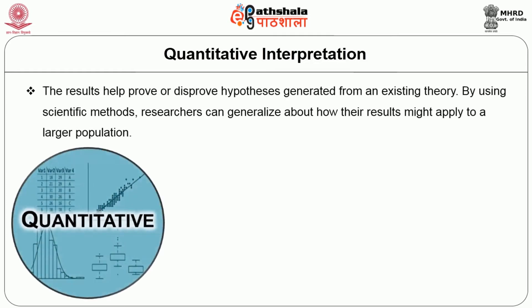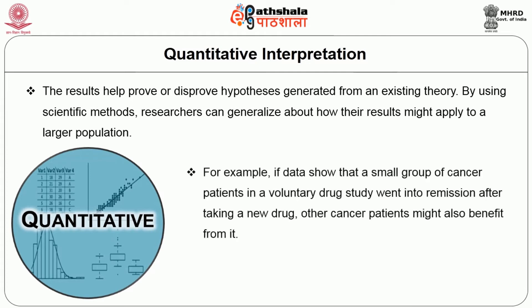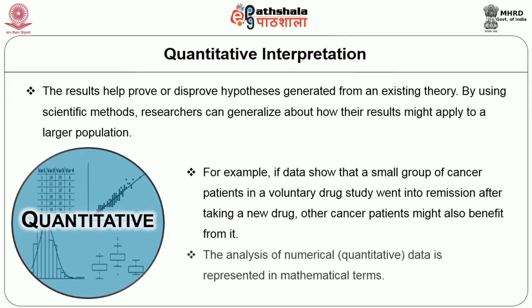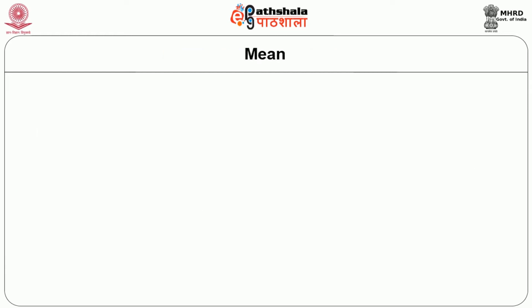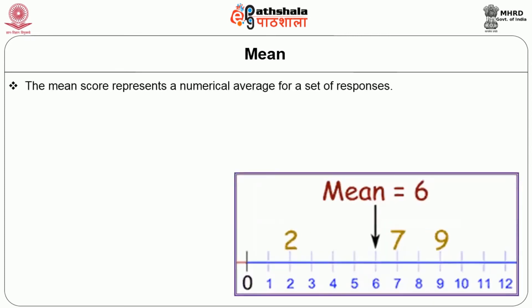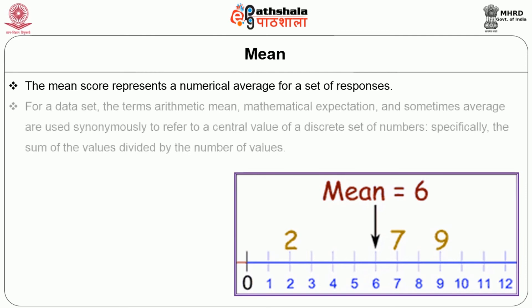The results help prove or disprove hypothesis generated from an existing theory. By using the scientific method, researchers can generalize about how their results might apply to a larger population. For example, if data showed that a small group of cancer patients in a voluntary drug study went into remission after taking a new drug, other cancer patients might also benefit from it. The analysis of numerical data is represented in mathematical terms. The most common statistical terms include mean — the mean score represents a numerical average for a set of responses. For a data set, the terms arithmetic mean, mathematical expectation, and sometimes average are used synonymously to refer to a central value of a discrete set of numbers.